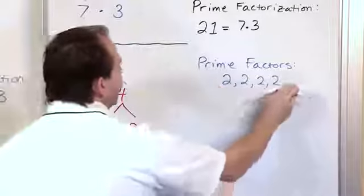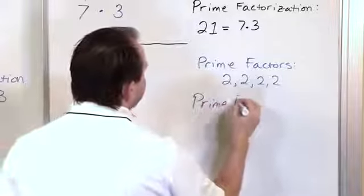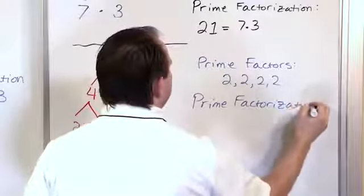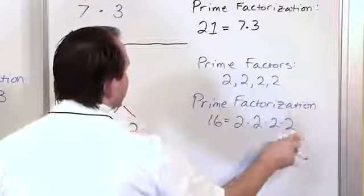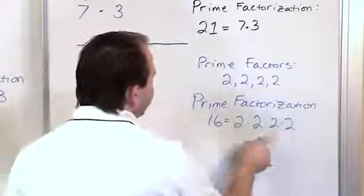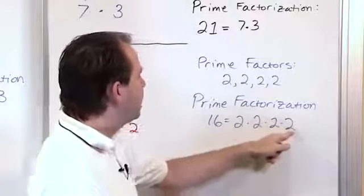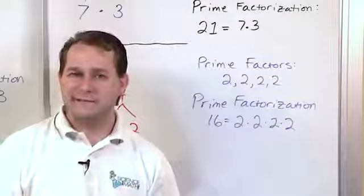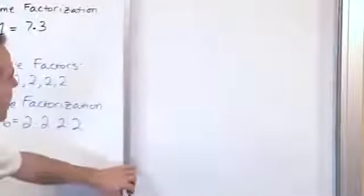You need to write down as many 2's as you find at the bottom to list everything. The prime factorization is 16 equals 2 times 2 times 2 times 2. When you multiply these together it gives you 16: 2 times 2 is 4, times 2 is 8, times 2 is 16. Everything at the bottom of this tree, those numbers multiplied together, give you the number you're after.